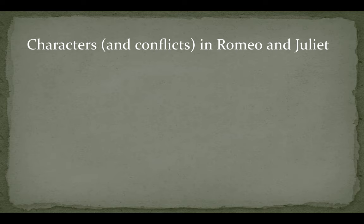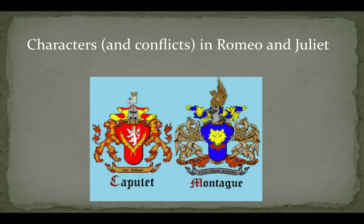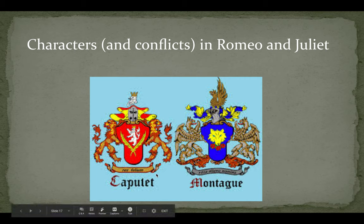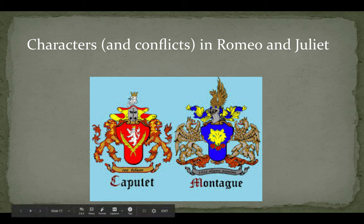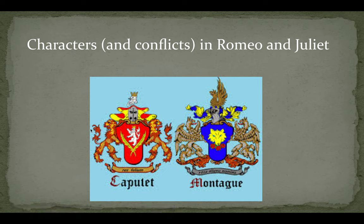Now let's talk about the characters and conflicts in Romeo and Juliet. The main conflict is a squabble or feud between the family Capulet and the family Montague — a family feud. To remember which family is which: think of 'Juliet Capulet' — there's a little rhyme going on there. And if you can remember Juliet Capulet, you'll remember that Romeo is a Montague. These two families do not get along.